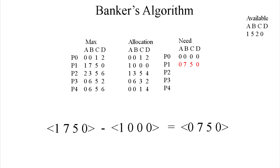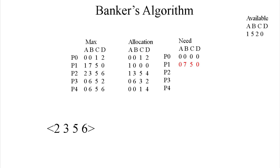Next, we're going to grab 2, 3, 5, 6 and subtract 1, 3, 5, 4 from it. We end up with 1, 0, 0, 2.